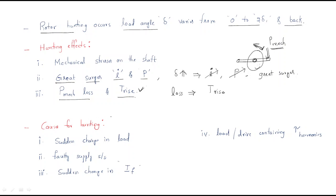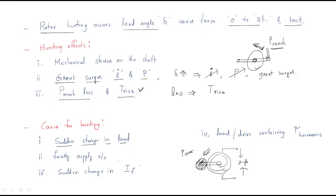The causes of hunting are as follows. First cause: sudden change in load. If the synchronous motor has a mechanical load that suddenly increases or drops to zero, surges occur and hunting develops.